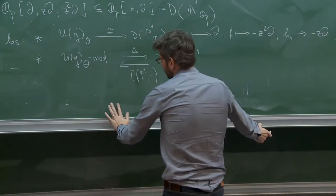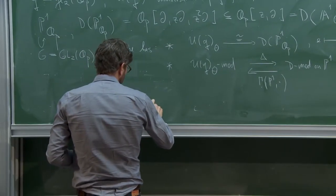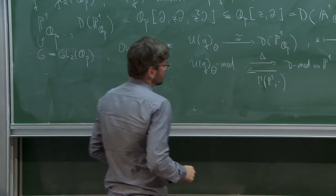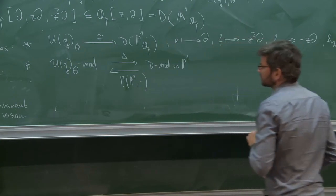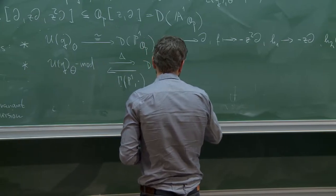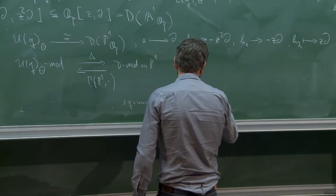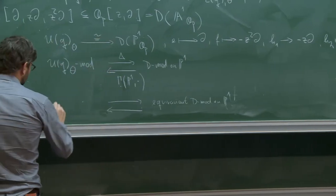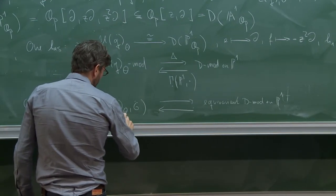What is more important is that if one brings in the G action, then one can write down an equivariant version of this equivalence. This sheaf of differential operators is an equivariant sheaf with respect to the G action on P1, so one has a subcategory of equivariant D-modules on P1. This is equivalent to certain representations of G which come equipped with a compatible action of the Lie algebra.